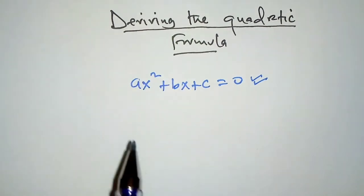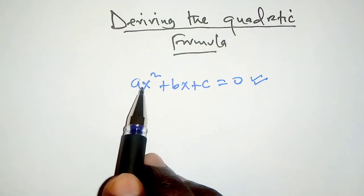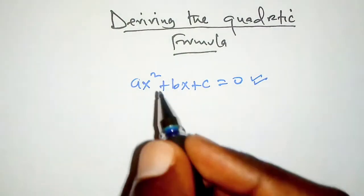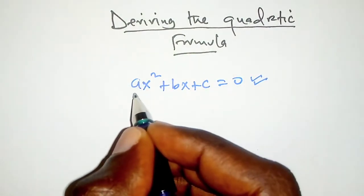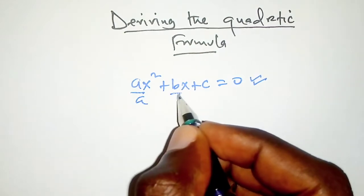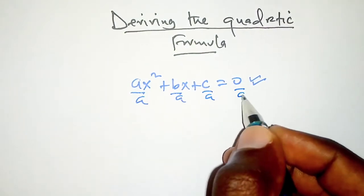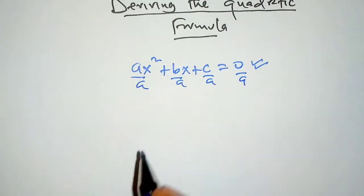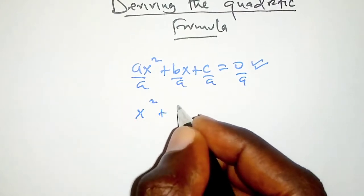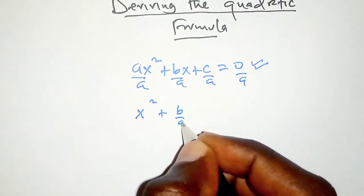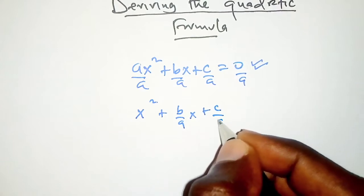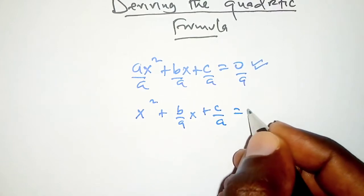The first thing we are going to do is make the coefficient of x squared unity. That means we divide all through by a, and that gives us x squared plus b over a times x plus c over a equals zero.